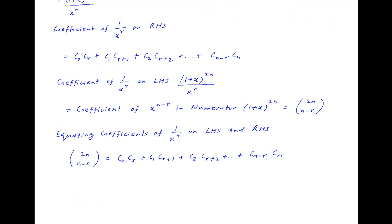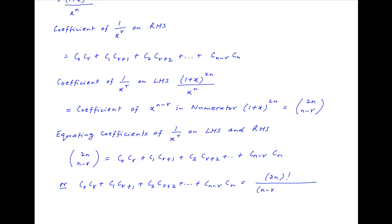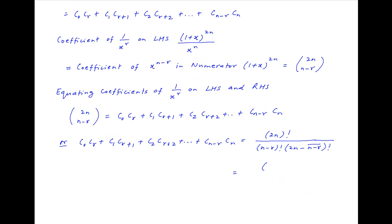Therefore: C0·Cr + C1·C(r+1) + C2·C(r+2) + … + C(n−r)·Cn = 2n choose (n − r), which equals (2n)! divided by (n − r)! times (n + r)!.